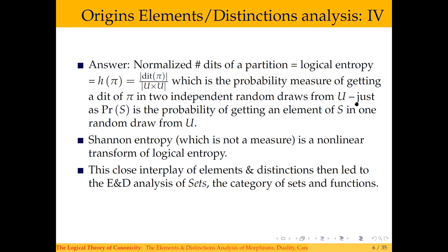When you mention information theory, people ask about the relationship to Shannon entropy. Shannon entropy is not a measure in the sense of measure theory, but it's obtained by a certain nonlinear transformation of logical entropy. You often see Venn diagrams in information-theoretic books for Shannon entropy, conditional, joint, and mutual entropy, but it's not a measure-theoretic measure. Logical entropy is, and this transformation preserves Venn diagrams — that's how Shannon entropy satisfies those Venn diagrams.